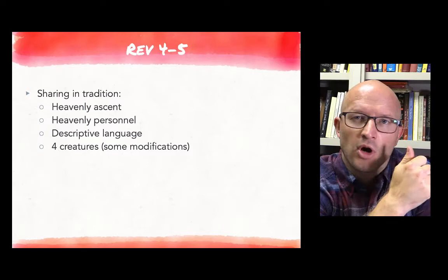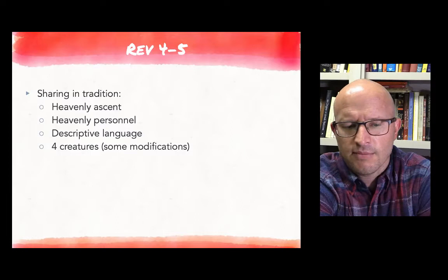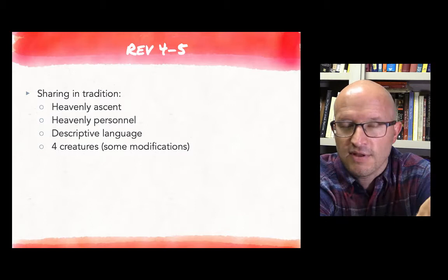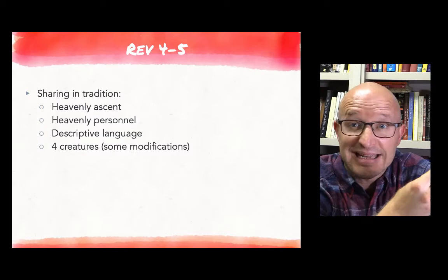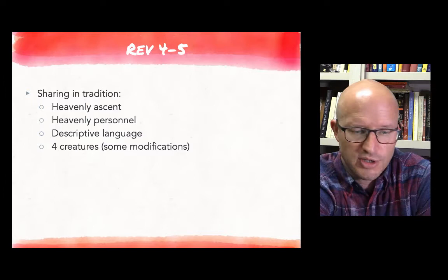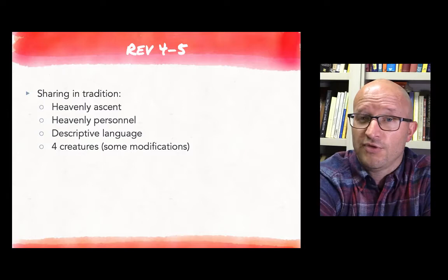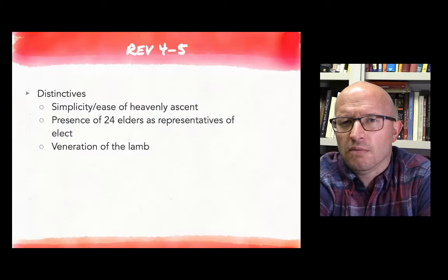With these broad brushstrokes of the traditions in mind, I want to return to Revelation 4 and 5 and consider some of its shared characteristics and distinctive elements. It's clear once we've thought about 1 Enoch 14 or reviewed some of these Jewish apocalyptic texts that Revelation 4 and 5 shares in this tradition. It describes heavenly ascent, it's interested in the heavenly personnel, it uses descriptive language often emphasizing things like fire and lightning and shaking and smoke—things we see in many of these heavenly vision traditions. And of course, the four creatures also represent something similar in large part to what we see in Ezekiel 1.